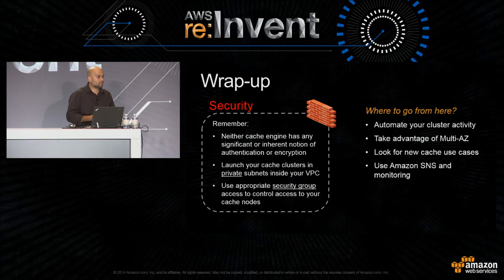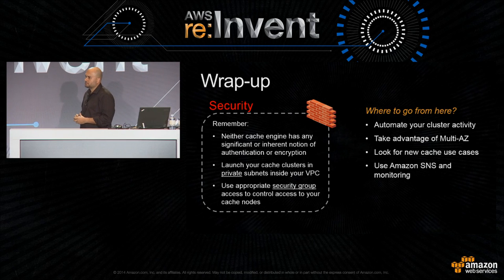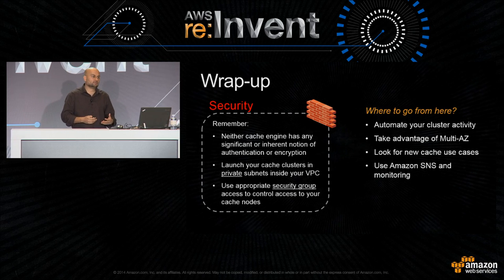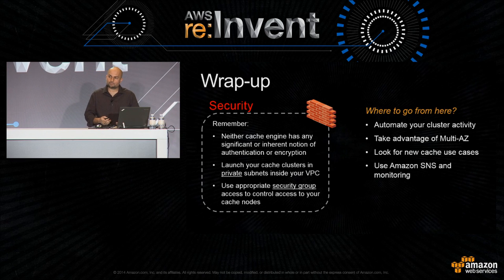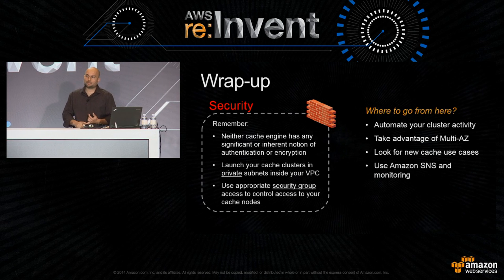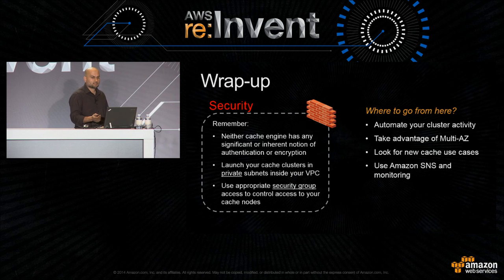To wrap up from my side, before I bring Frank on stage: remember there's no serious authentication or encryption that happens between the clients and the Memcached servers. Put them in private subnets, secure them, make sure the security groups are set up appropriately so that only access from whatever tier needs access gets access to them. And where do you go from here? Think about your use cases, make sure to take advantage of Multi-AZ, and use monitoring to figure out what's going on with your cluster.